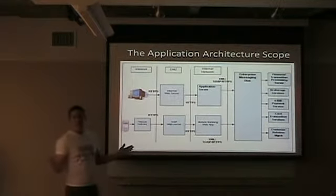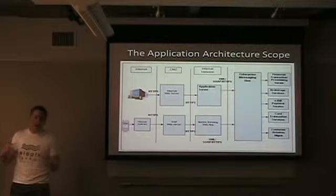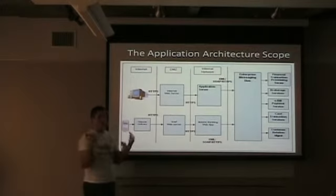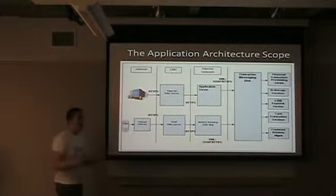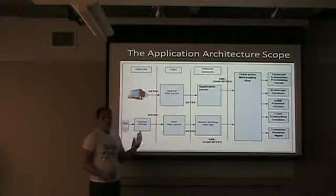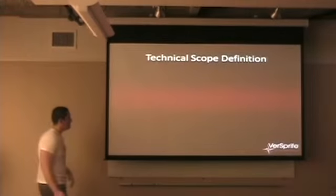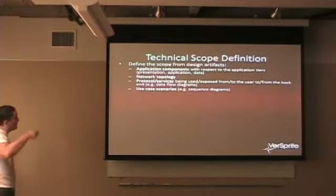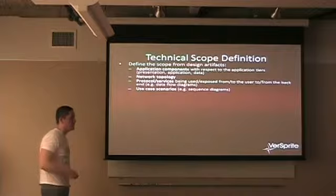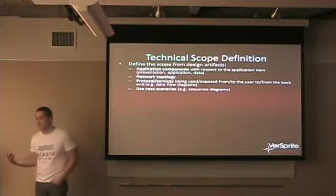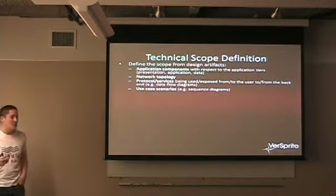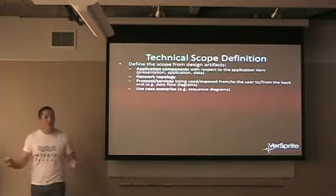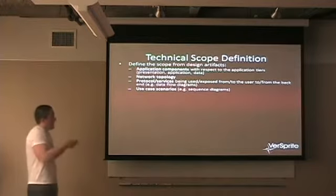This is what you don't get with pen testing or static analysis — this is the wrapper. We finally have a chance to back up and say, what do we really have in this environment? By defining the technical scope, we understand the network topology a lot better. Your network topology might have 'allow any, any, everywhere, every protocol all the time' — and now you know. There's always a presumption that certain mitigation exists.